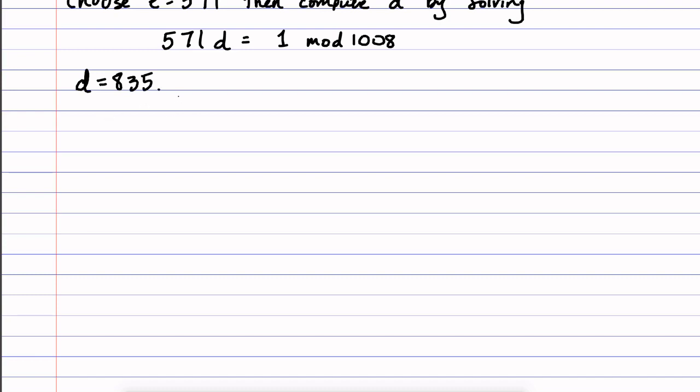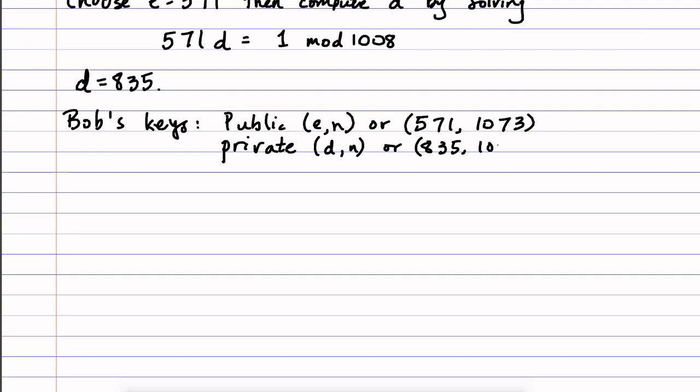Then we have our public and private keys for Bob. So his keys are: public key is (e,n), or in this case it's (571, 1073), and his private key is (d,n), so in this case (835, 1073).